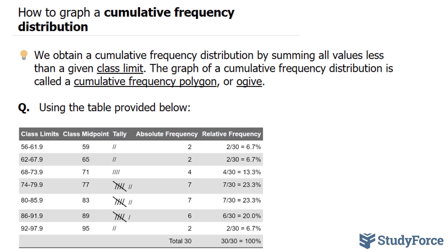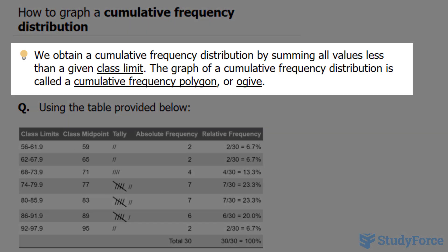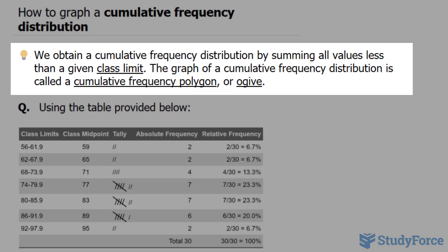In this video, I'll show you how to graph a cumulative frequency distribution. We obtain a cumulative frequency distribution by summing all values less than a given class limit. The graph of a cumulative frequency distribution is called a cumulative frequency polygon, or ogive.